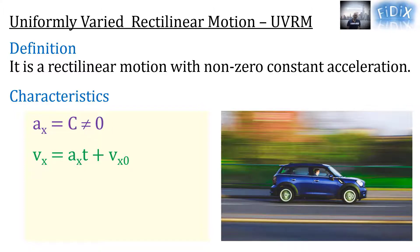And the primitive of vx, x equals half ax·t² plus vx₀·t plus x₀.